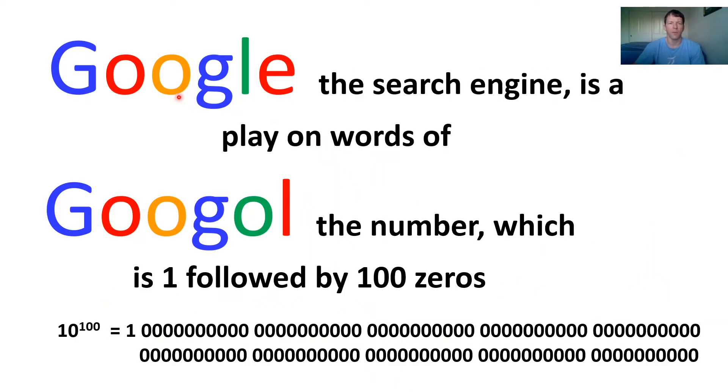Okay, so first let's get some definitions across. Google is a search engine. The way they came up with the name for this search engine is a play on words for the number. The number came first. Look at the spelling G-O-O-G-O-L versus the search engine ends in L-E. Okay, and the definition of this number is one followed by a hundred zeros.